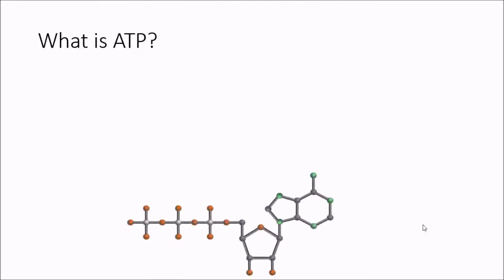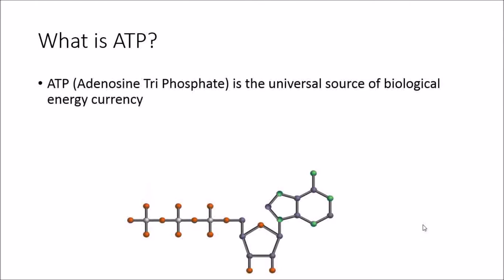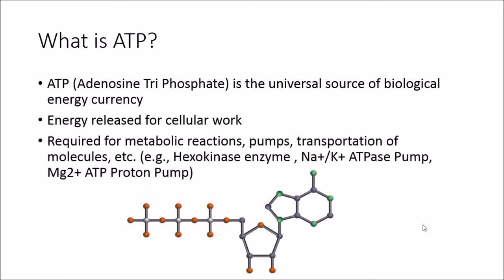What is ATP? Adenosine triphosphate is the universal source of biological energy currency — without ATP we would not be able to survive. ATP is energy released for cellular work, needed for various metabolic reactions, pumps, and transportation of molecules, such as the sodium-potassium ATPase pump, the magnesium-ATP proton pump, and the hexokinase enzyme within glycolysis. Without ATP, we cannot function.